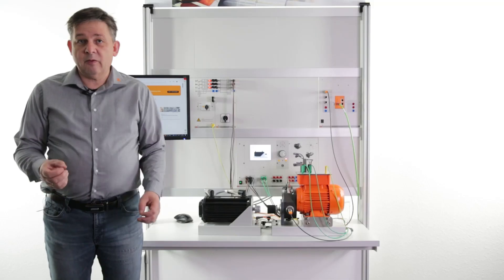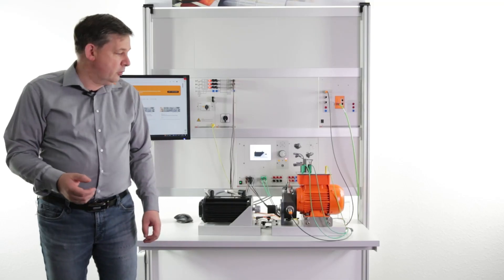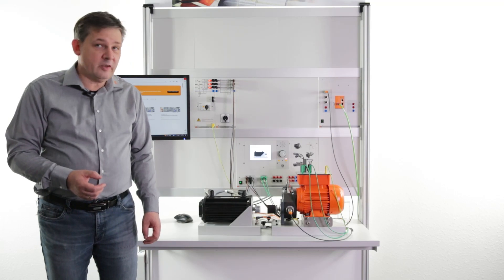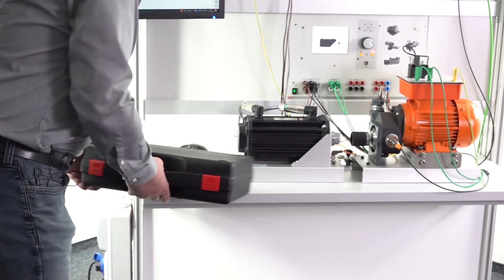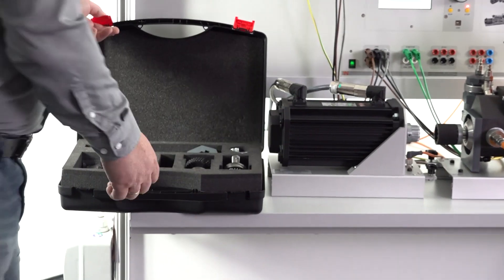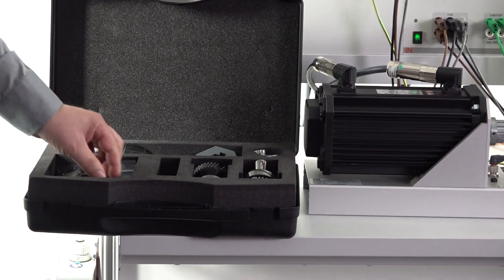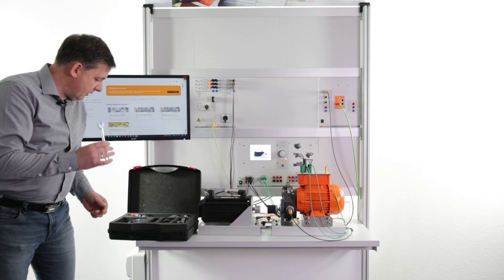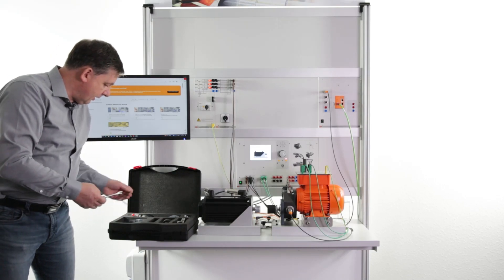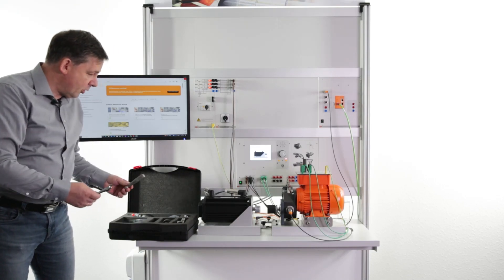Let me give you a short demonstration of how to perform different faults with the system. Let me start with misalignment. Here we have different accessories. So for misalignment, I need the key, an Allen key, and the gauge.